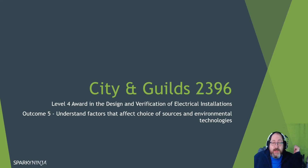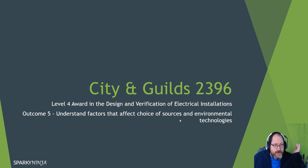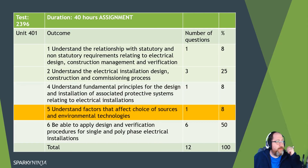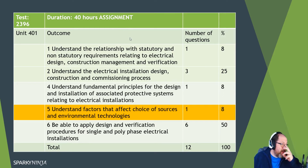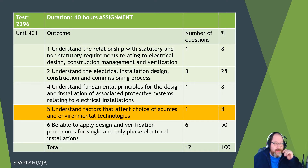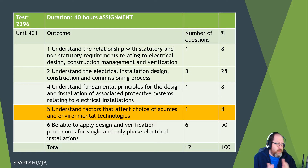Here we have another relatively short Outcome 5 in the 2396 course: understanding the factors that affect the choice or sources of environmental technology. This one is not in the written exam — it's a question that will be part of the assignments and the big project. It's just a consideration, assessing your understanding of the presence of environmental technologies and when we should or shouldn't consider them, and what benefits there are with each.